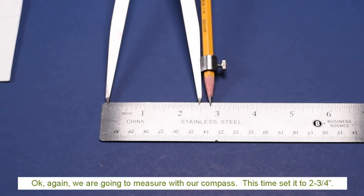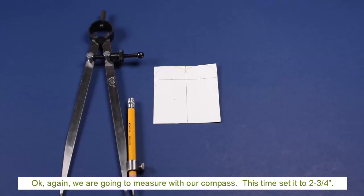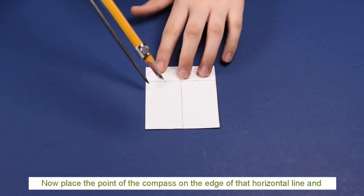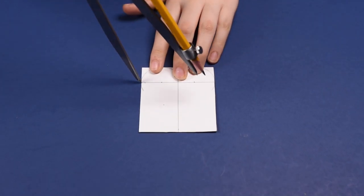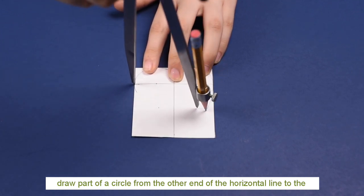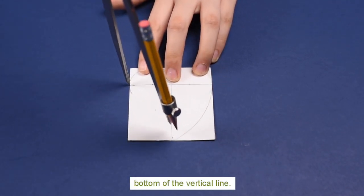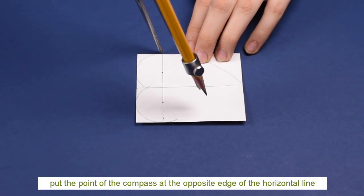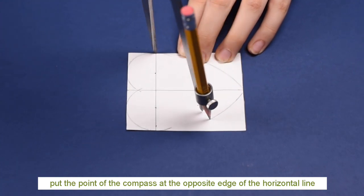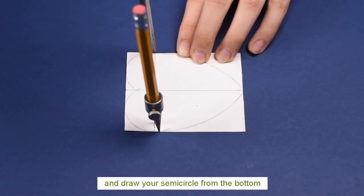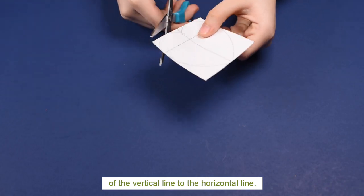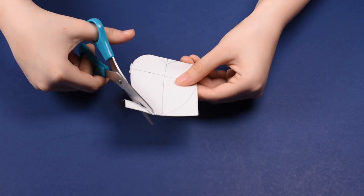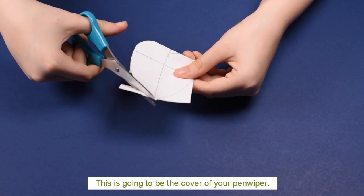Okay, now we're going to measure again with our compass. This time set it to two-and-three-quarters of an inch. Now place the point of the compass on the edge of that horizontal line and draw part of a circle from the other end of the horizontal line to the bottom of the vertical line. Then change sides. Put the point of the compass at the opposite edge of the horizontal line and draw your semi-circle from the bottom of the vertical line to the horizontal line. And now you can cut out your heart shape. This is going to be the cover of your pen wiper.